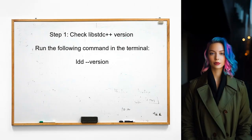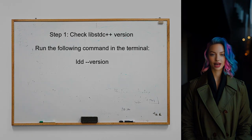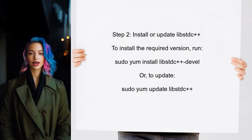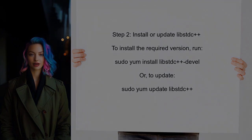To resolve the GLIBCXX version issue, first check the current version of the libstdc++ library installed on your system. This can be done by running a specific command in the terminal. Next, ensure that you have the correct version of the libstdc++ library that includes GLIBCXX 3.4.21. This may require updating or installing a newer version of the library.